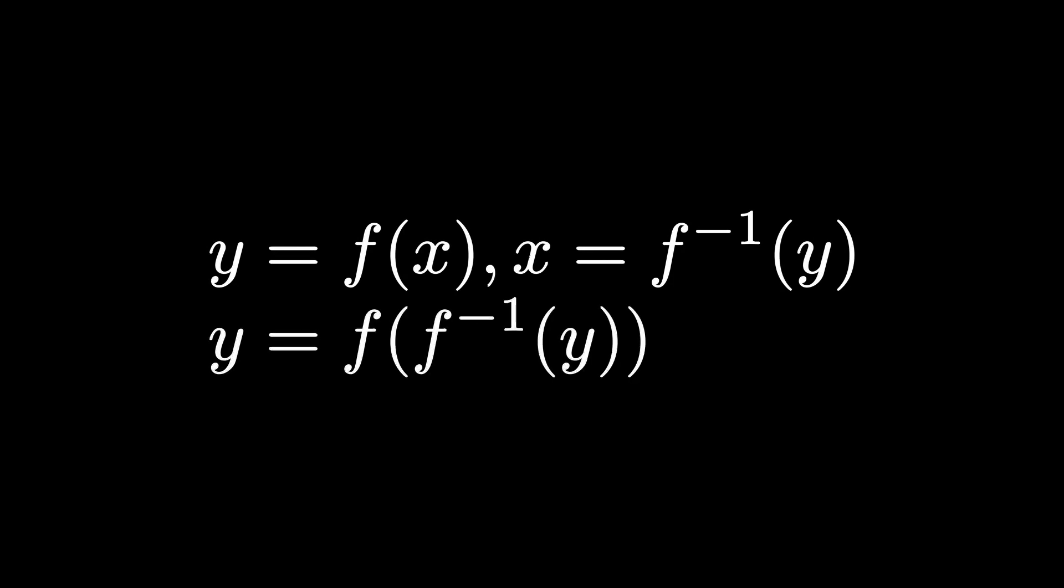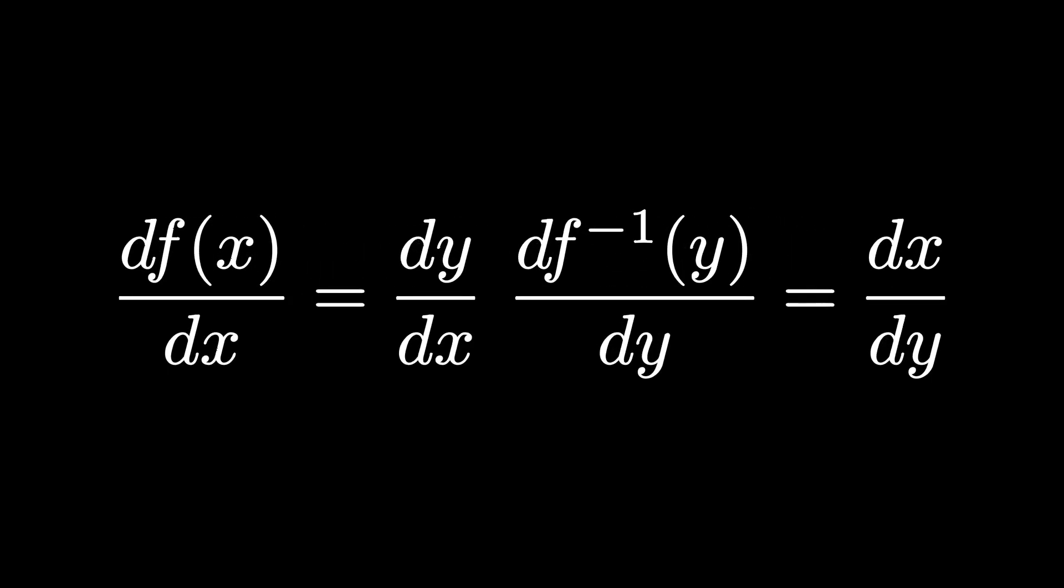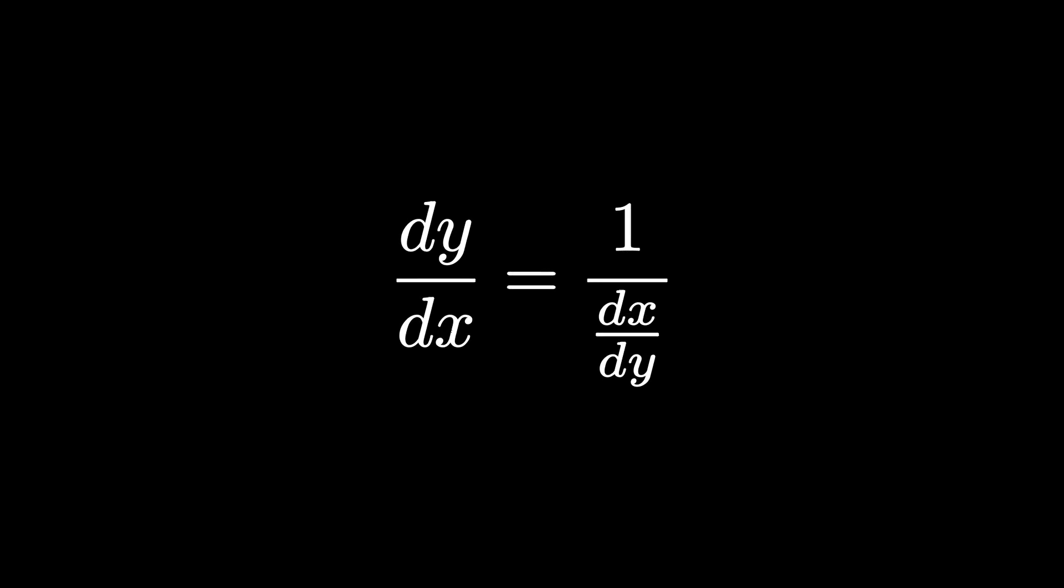Well, let's just take any two inverse functions, y equals f of x, and x equals inverse f of y, such that y equals f inverse f of y. Let's notate their derivatives in Leibniz notation, so we get df of x over dx is equal to dy over dx, and d inverse f of y over dy is dx over dy. We can see that the derivatives are reciprocals of one another. dy over dx is equal to 1 over dx over dy.